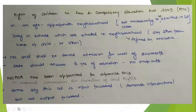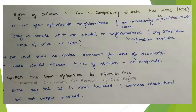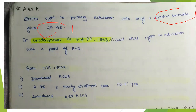The original constitution provided the right to education as a directive principle under Article 45, which stated that the state shall endeavor to provide free and compulsory education to all children up to the age of 14 years.